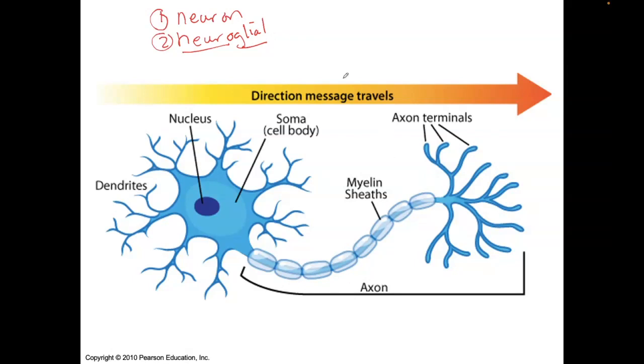The one that we're focusing on here in this picture is called the neuron. It's the only one that's electrically excitable. If you look at the arrow on top, it shows the direction that the message is traveling. So it's going from here, it's going to work its way down to the very end.